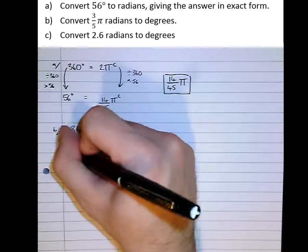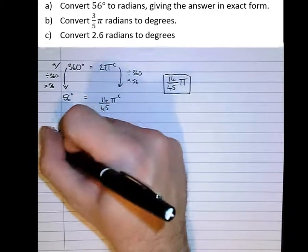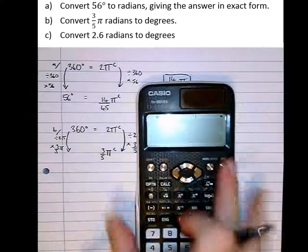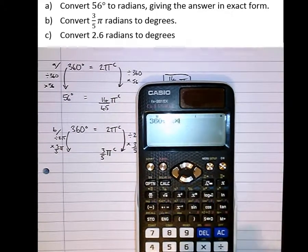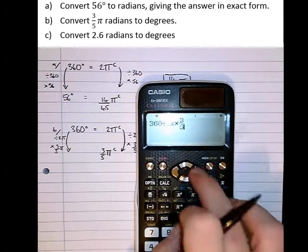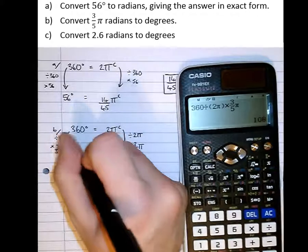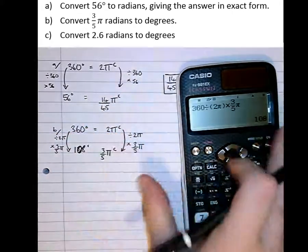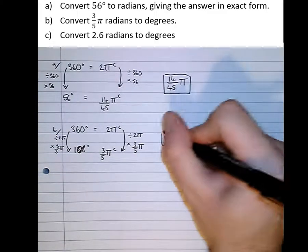Then do exactly the same thing to the left hand side, divide by 2π, times by 3/5 π, so 360 divided by 2π times 3/5 π equals 108 degrees. So the answer is 108 degrees.